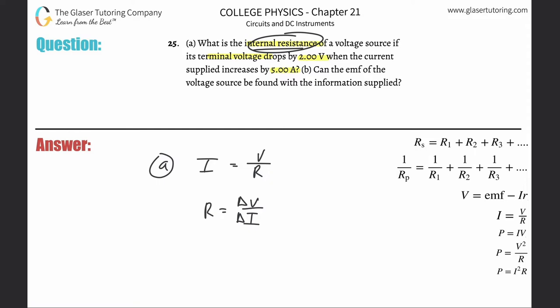In other words, it would then be equal to the internal resistance. So we simply would take 2 over 5 and that works out to be 0.4 Ohms. Look at that. Boom. There it is.